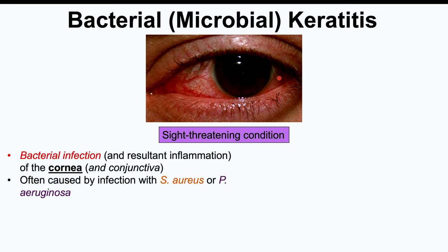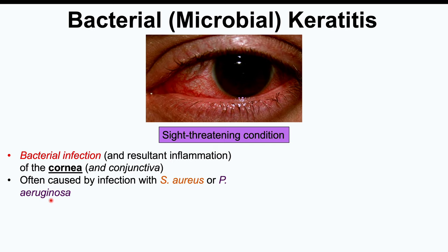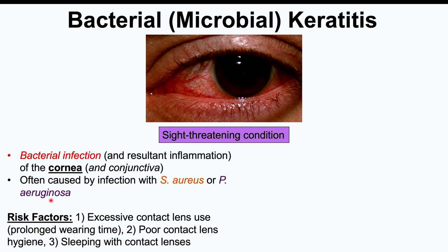The bacteria most commonly causing bacterial keratitis in contact lens users are Staphylococcus aureus or Pseudomonas aeruginosa. Risk factors related to contact lens use include excessive contact lens use with prolonged wearing time, using lenses past their expiry date, poor contact lens hygiene — not properly cleaning lenses or the storage case — and not changing the case frequently enough. Ideally, the case should be changed each month. Sleeping with contact lenses in is also a significant risk factor.